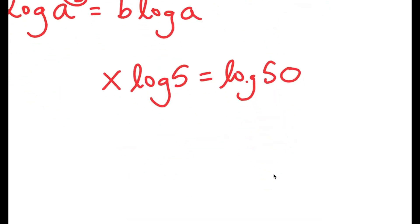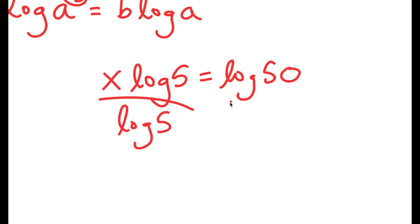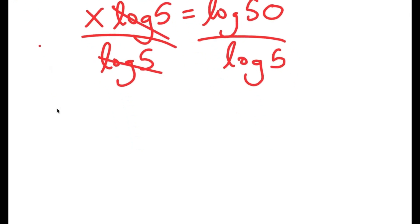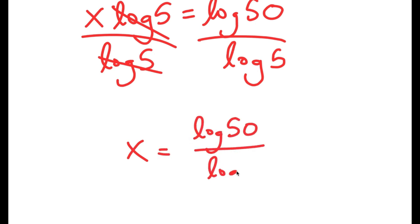Now we want to find the value of x, so all we have to do is divide both sides by log 5. These cancel out and I get x is equal to log 50 over log 5.